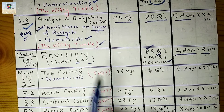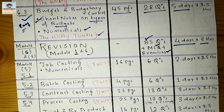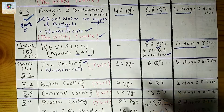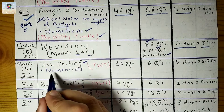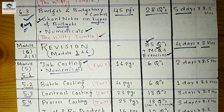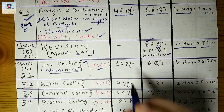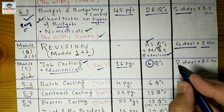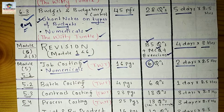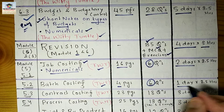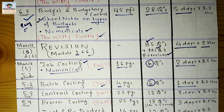After the first revision, we start Module 5. The first chapter is Job Costing — very easy. Focus more on numericals; find all the classes on my YouTube channel. It has 16 pages and only six questions — it will take two days. Next is Batch Costing, also on my channel — 4 pages and 6 questions, and you can finish this chapter in one day.